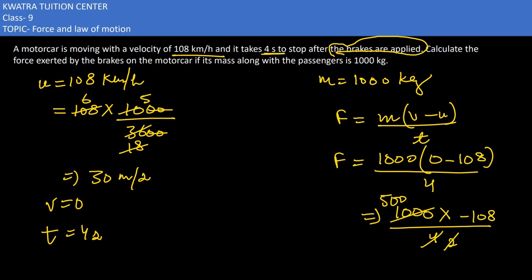So 4 can be cancelled with 1000, it will become 500, and 2 will get cancelled with 500, it will become 250. Now multiply 250 with minus 108, so it would be minus 7500 newton. That would be the force exerted by the brakes on the motor car.